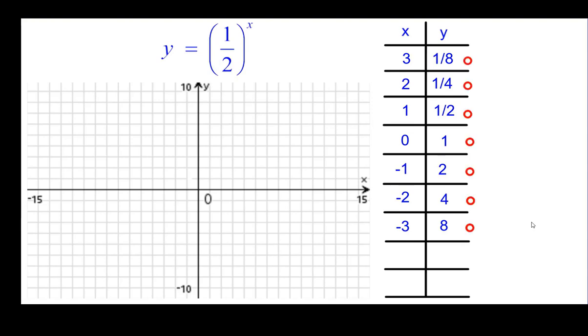We will go ahead and plot these seven points. Starting with negative three, eight, going left to right here. Negative two, four. Negative one, two. As a y intercept at one.